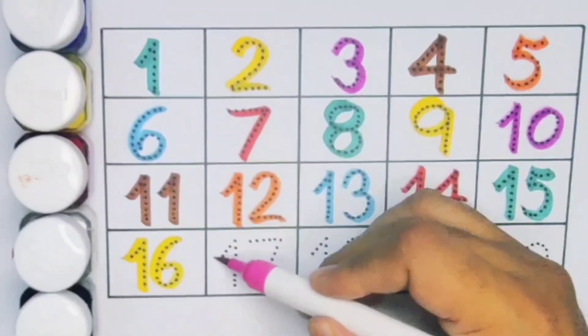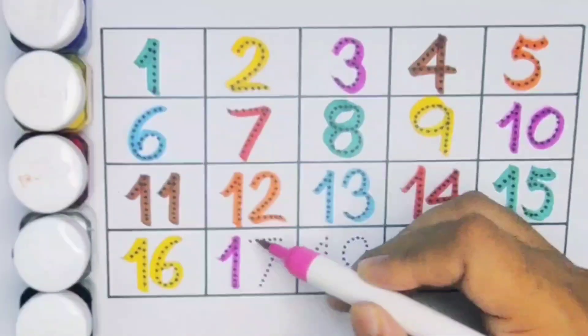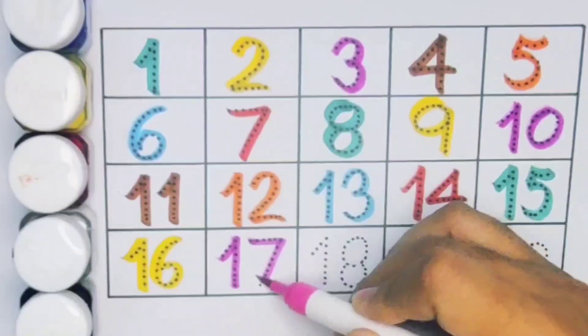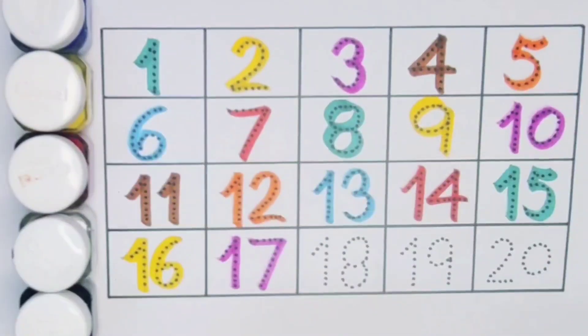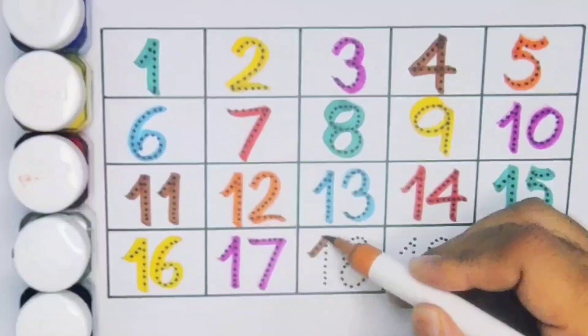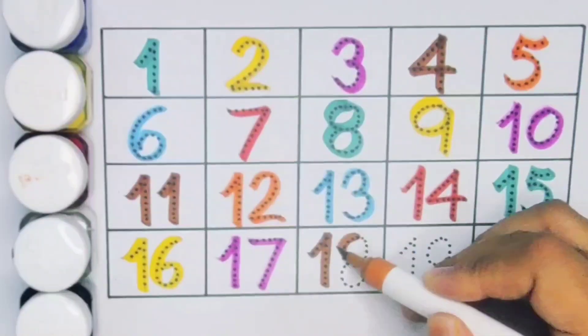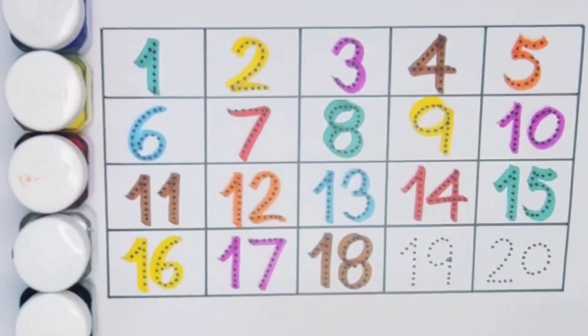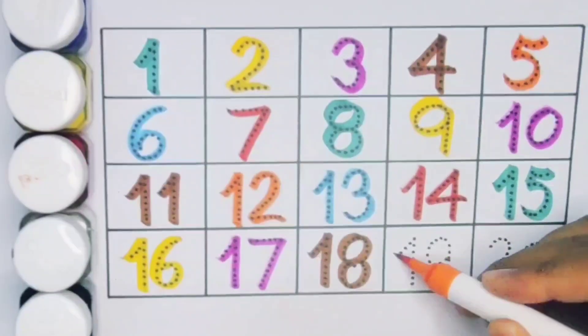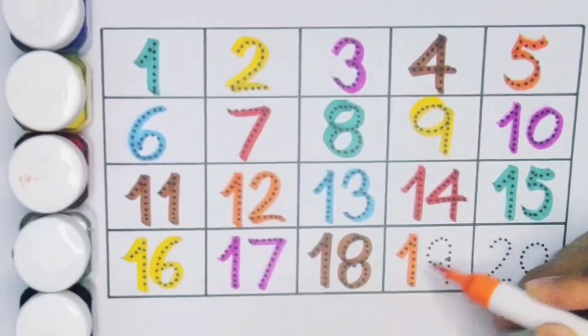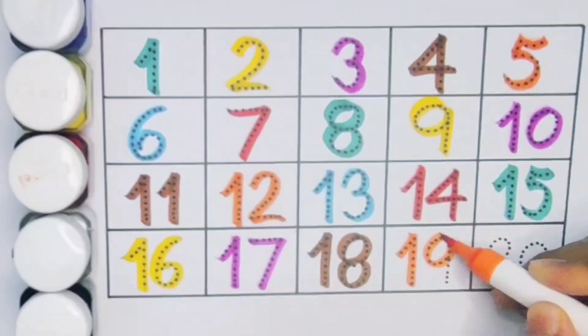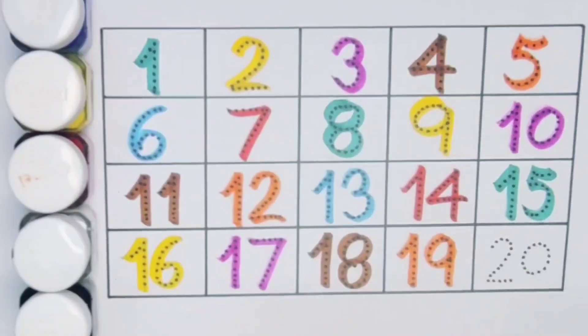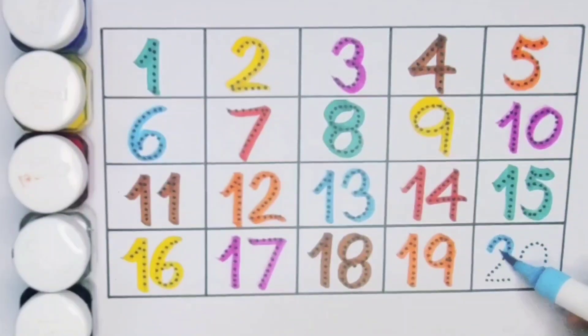Next kids 17, 1, 7, 17, number 17. Next kids 19, 1, 9, 19, number 19. Next kids 20, 2, 0, 20, number 20.